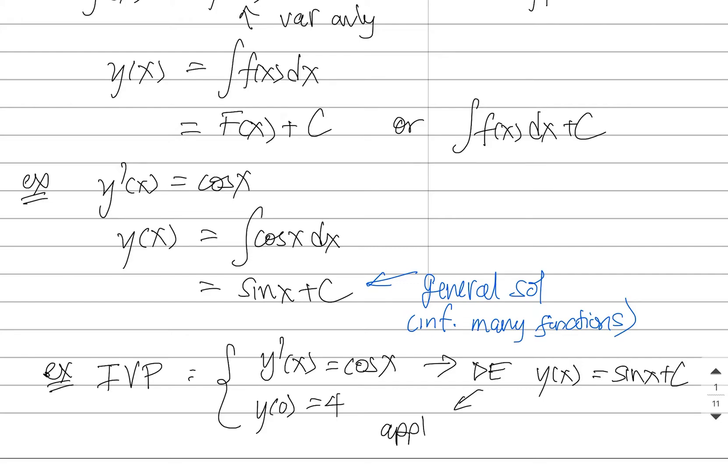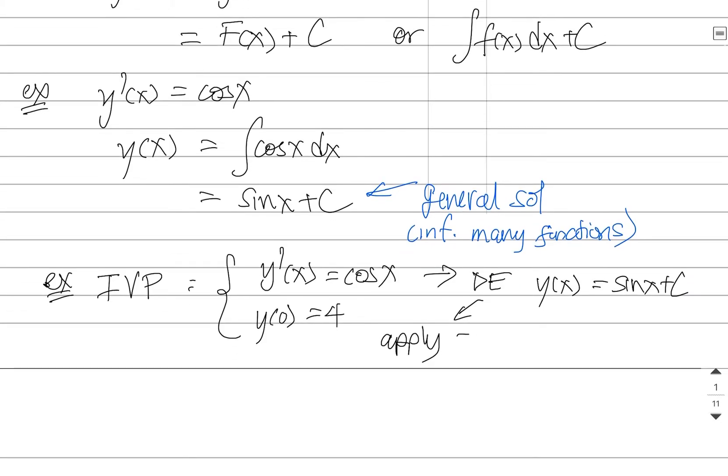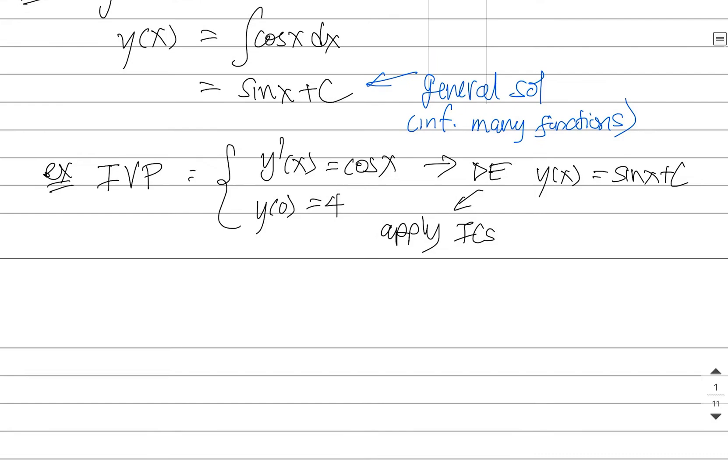In order to determine the constant, you're going to apply those initial conditions. So if you apply the initial conditions, you're going to consider the function you just got, and you're going to plug in 0. And when you plug in 0, you'll get a C in this case.